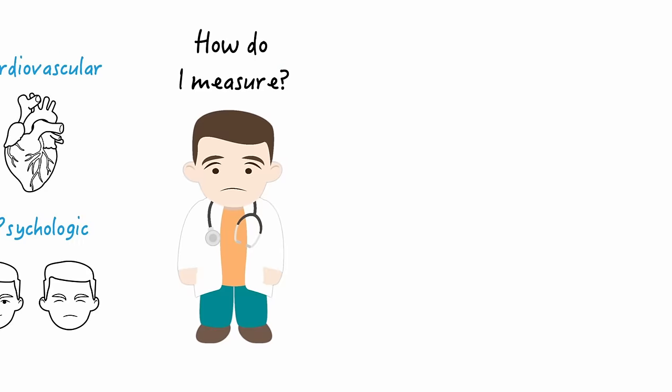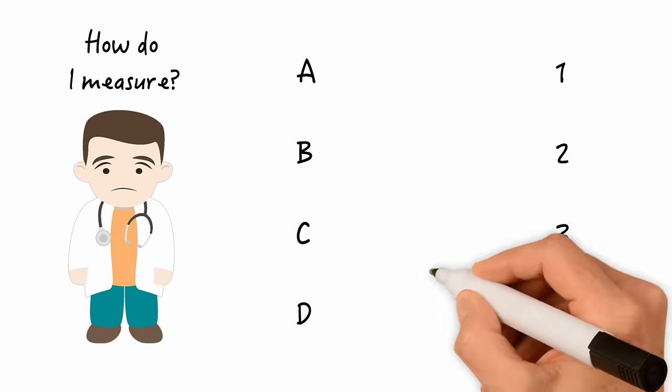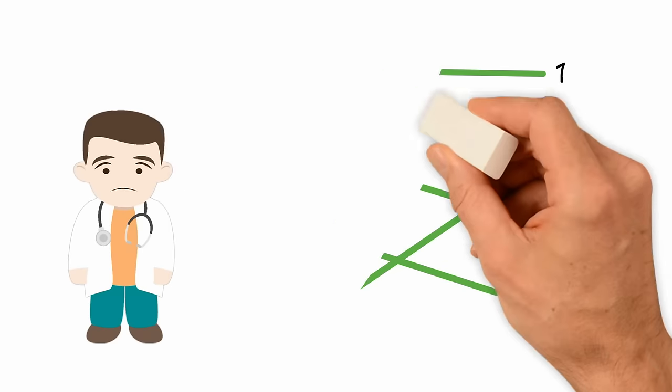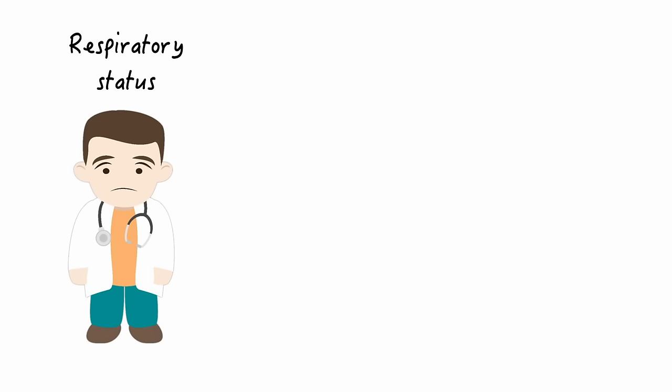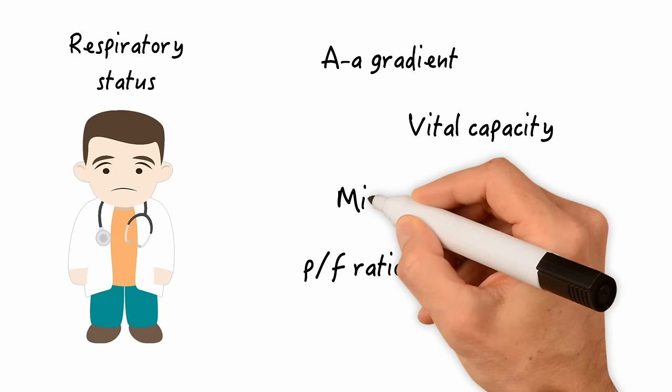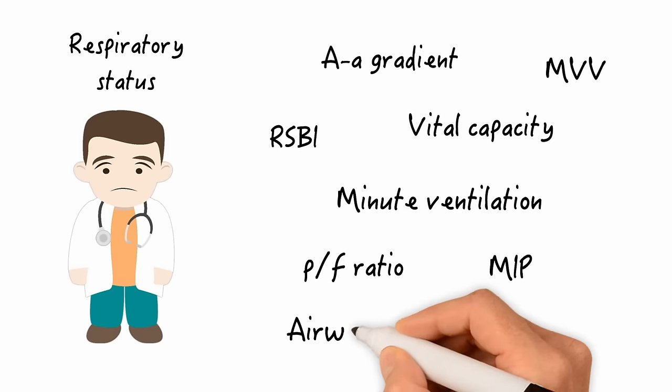Each of these areas can be assessed using a variety of indices, but the challenge is sometimes choosing which indices to use for each key area. For example, to evaluate the respiratory status during a spontaneous breathing trial, you can use the PF ratio, AA gradient, MIP, vital capacity, minute ventilation, MVV, RSBI, the airway occlusion pressure P0.1, and on and on.